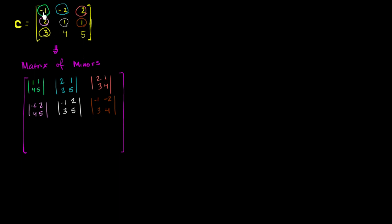Now let's move over here — get rid of the first column and last row. You have negative 2, 2, 1, 1. So we have the determinant of negative 2, 2, 1, 1.